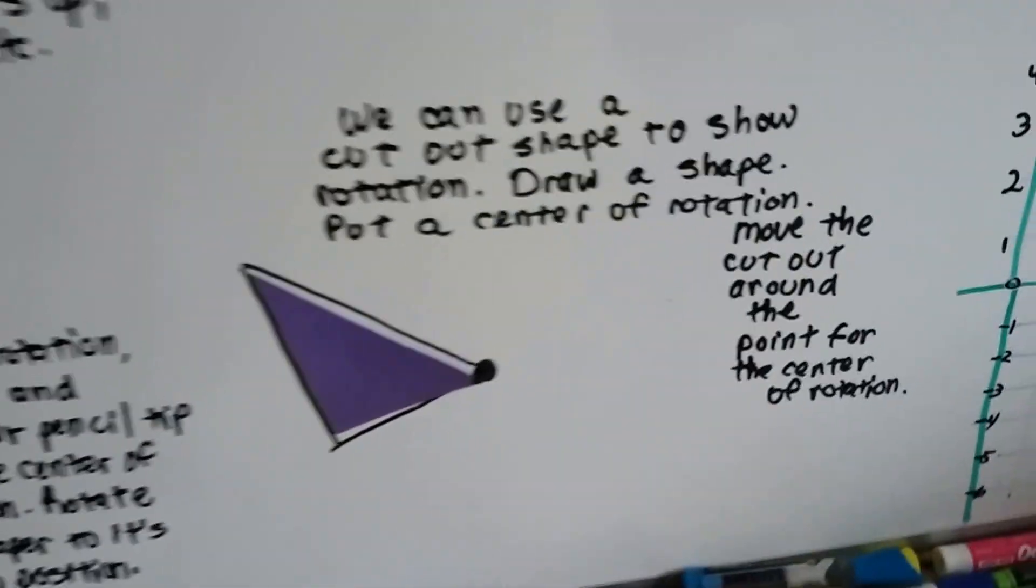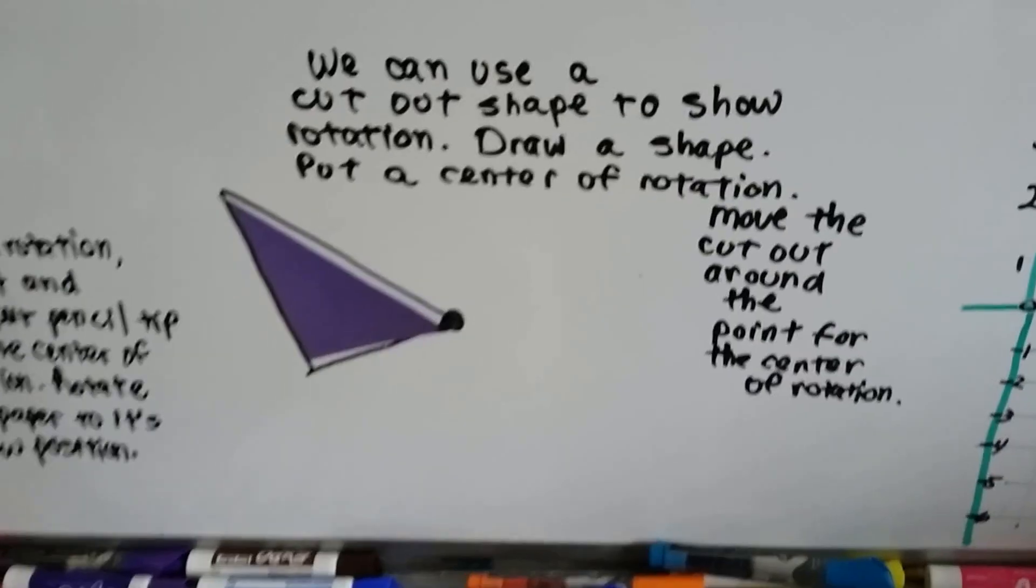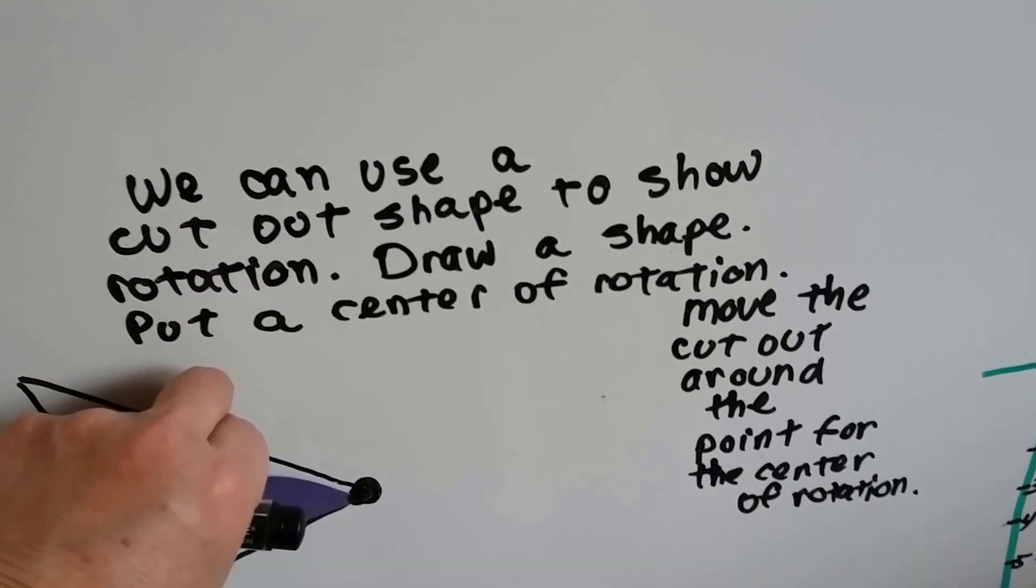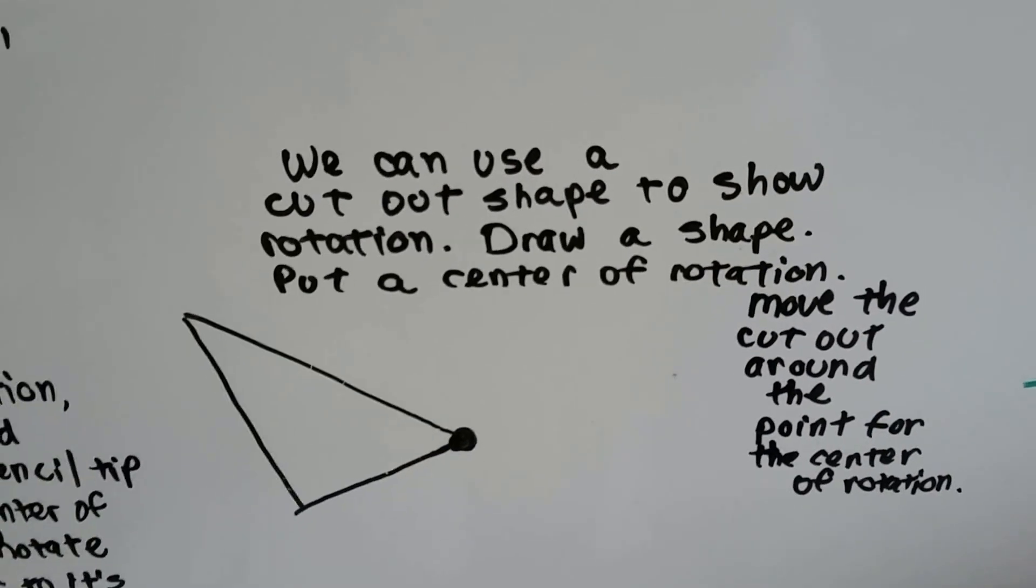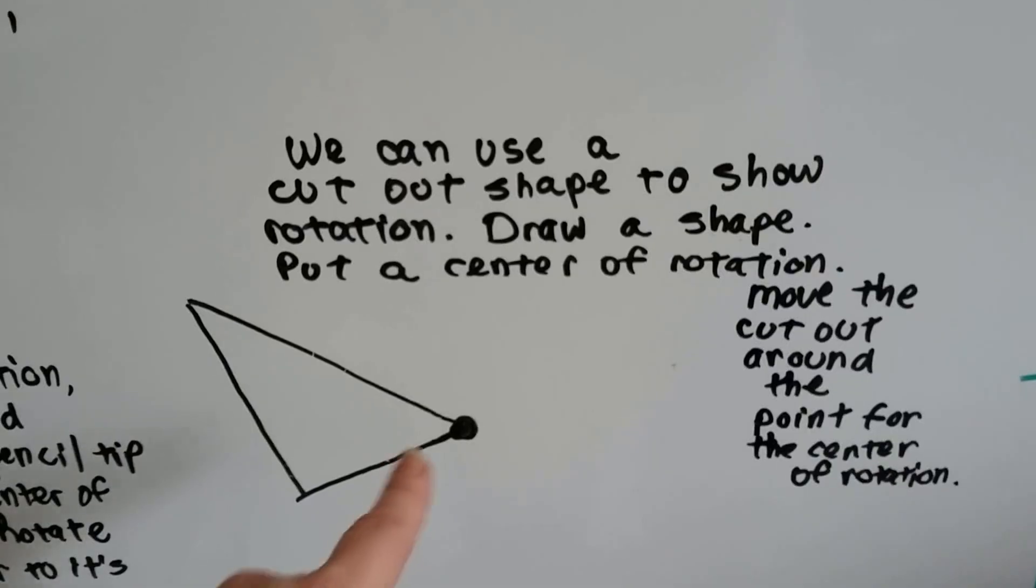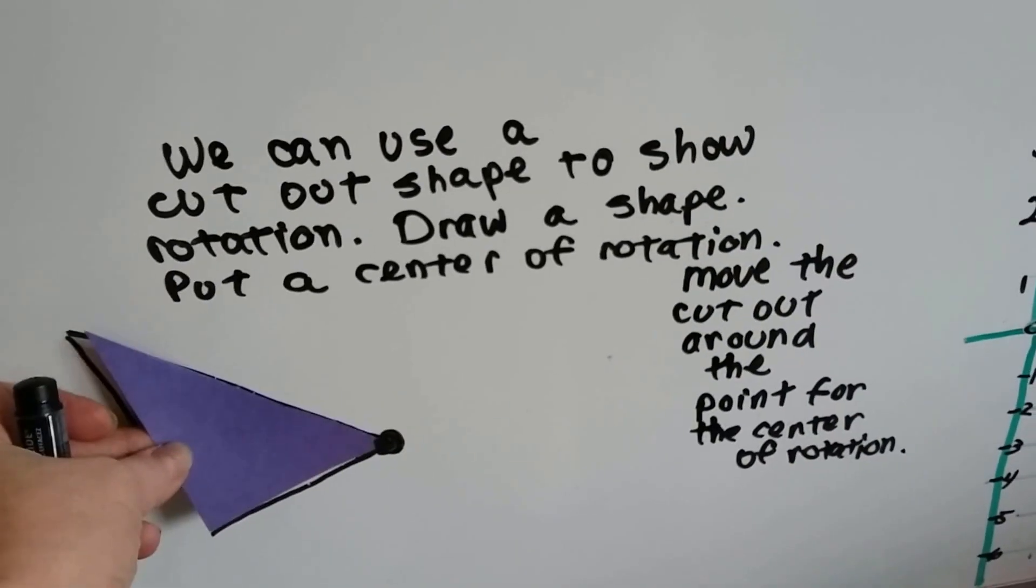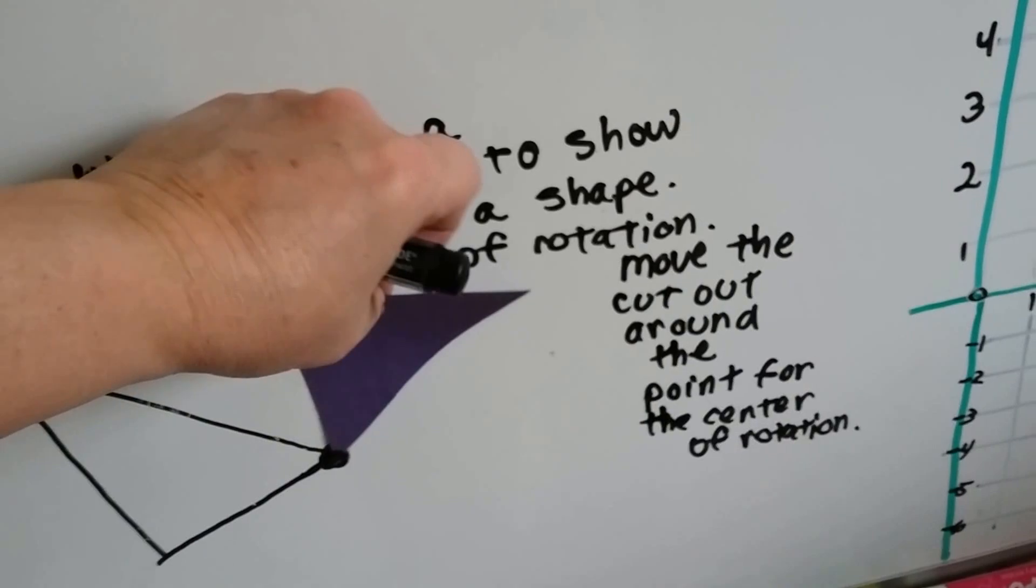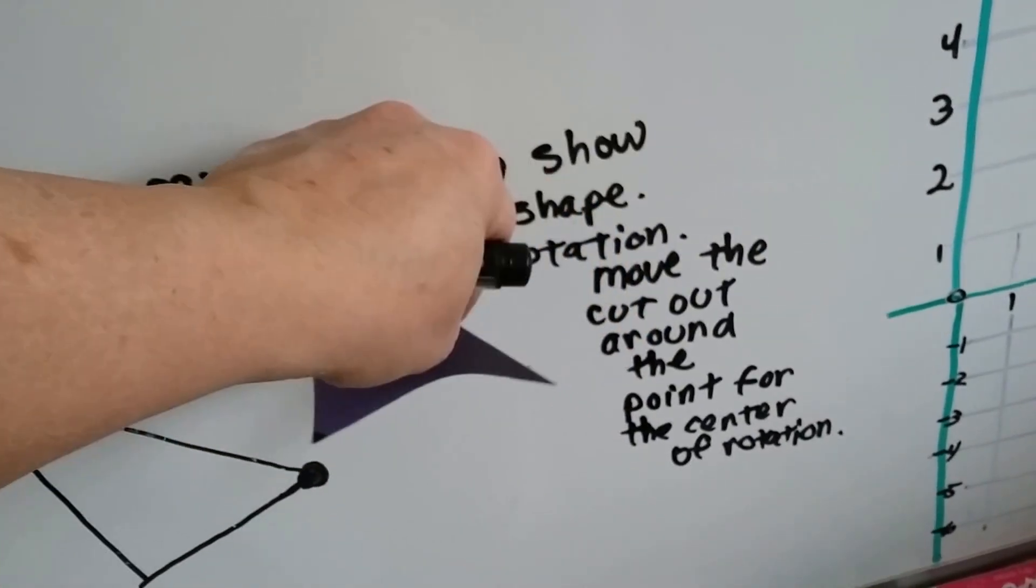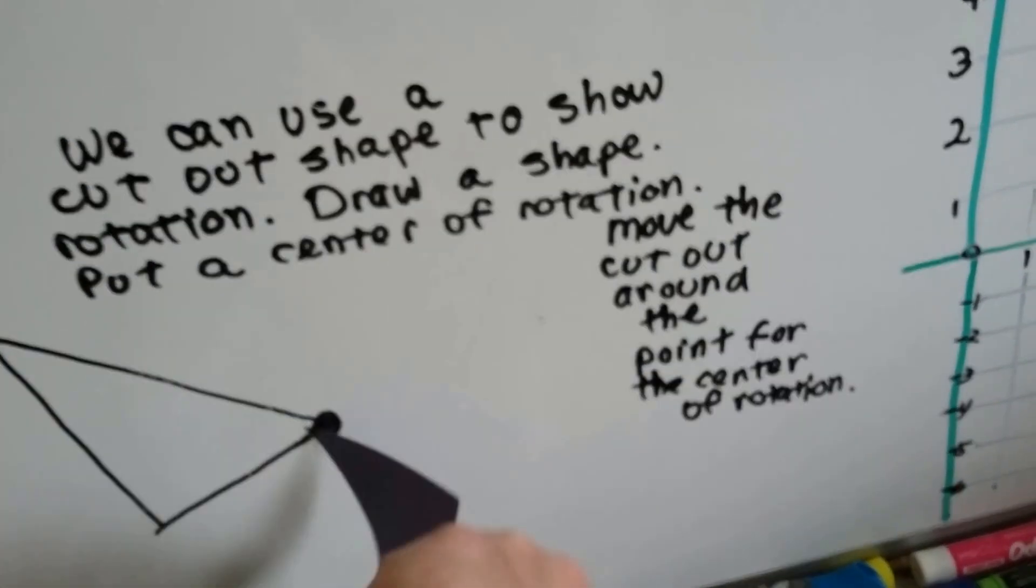We can also use a cutout shape to show rotation. All you have to do is draw yourself a shape, and put a center of rotation on it, and then take your cutout, and you can move it around the point for the center of rotation.